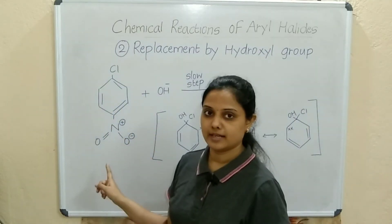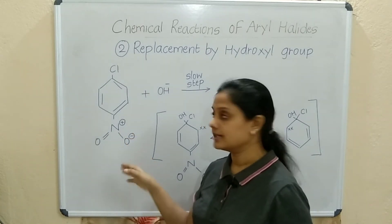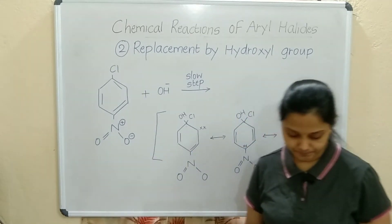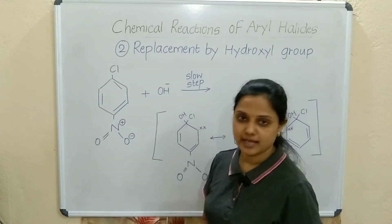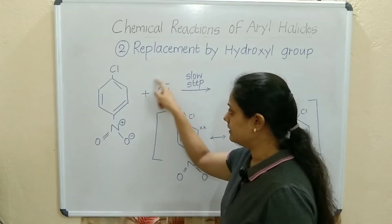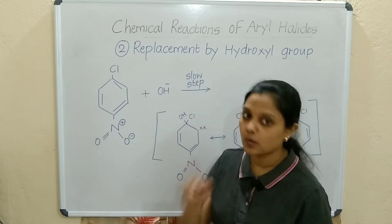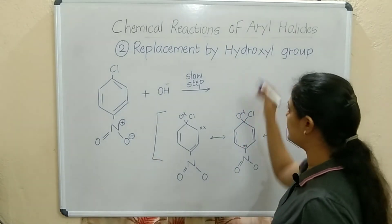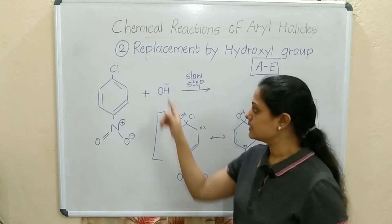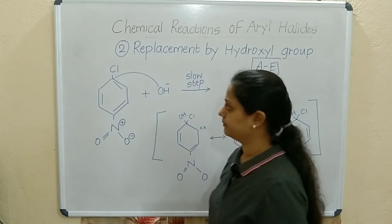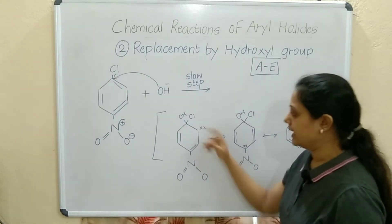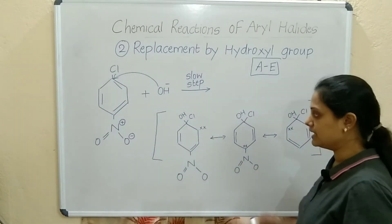I will show the mechanism for the first example. At para positions, chlorine is present and NO2 is present. The nucleophile OH minus comes from NaOH. In the addition step — which is the slow step — OH is added to the ring. So addition takes place first.